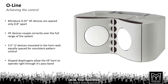Next to them are small three-and-a-half-inch LF devices mounted in the horn wall. They are equally spaced for consistent piston control, and those shaped diaphragms allow the HF horn to operate right through its passband without interfering.